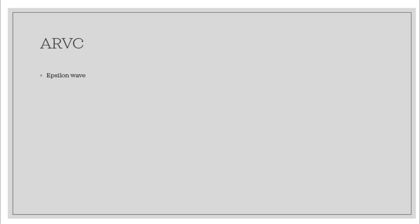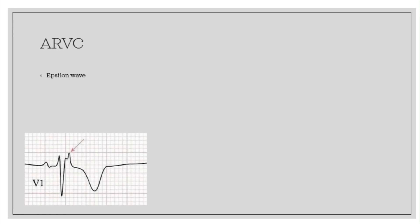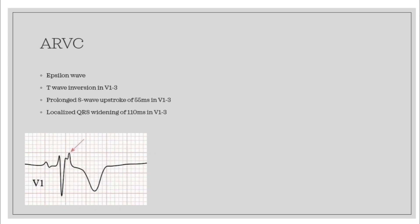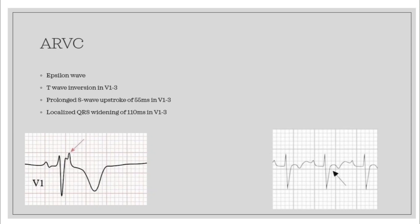Here are some signs on a 12-lead. First, you've got your epsilon wave — that's the most specific finding for this, seen in 30 percent of patients. Next, you've got T wave inversions in V1 through V3, which happens in 85 percent of patients. Next, you've got a prolonged S wave upstroke in V1 to V3, which happens in 95 percent of patients, along with localized QRS widening in V1 to V3.